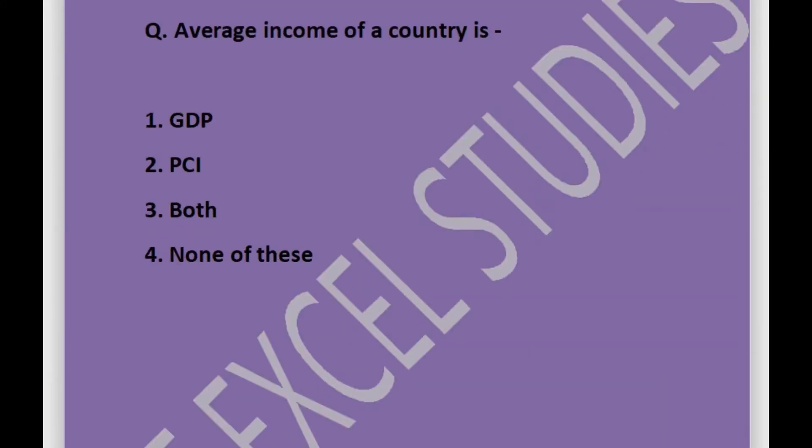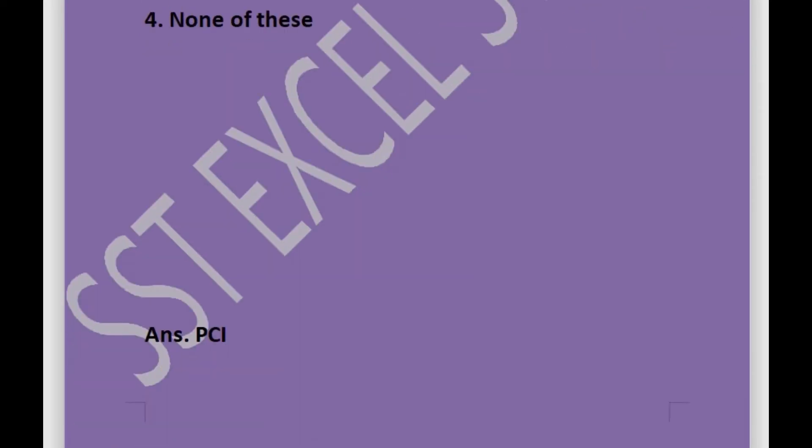Next question: average income of a country is — options are GDP, PCI, both of these, or none of these. Answer is PCI. PCI stands for per capita income.